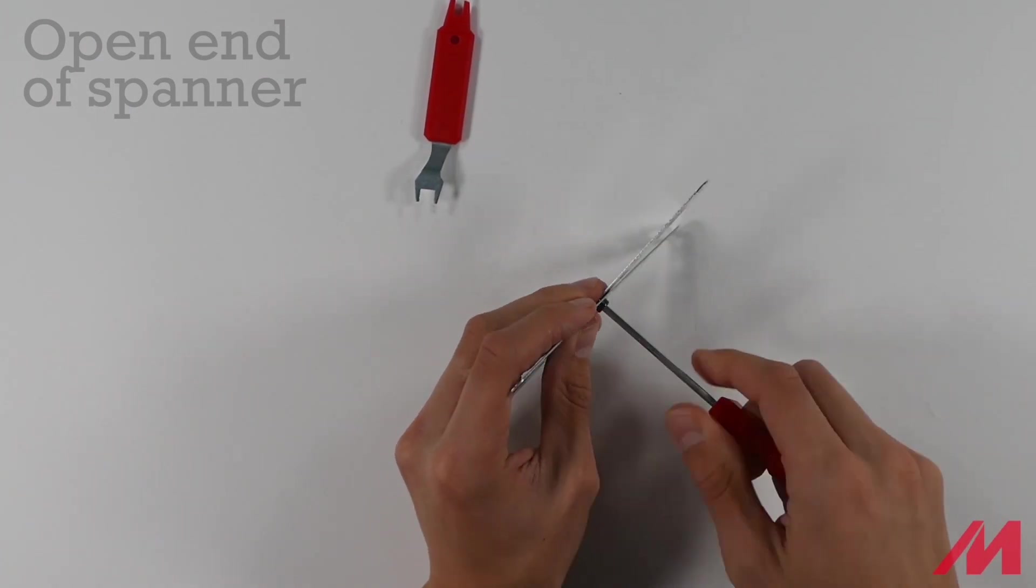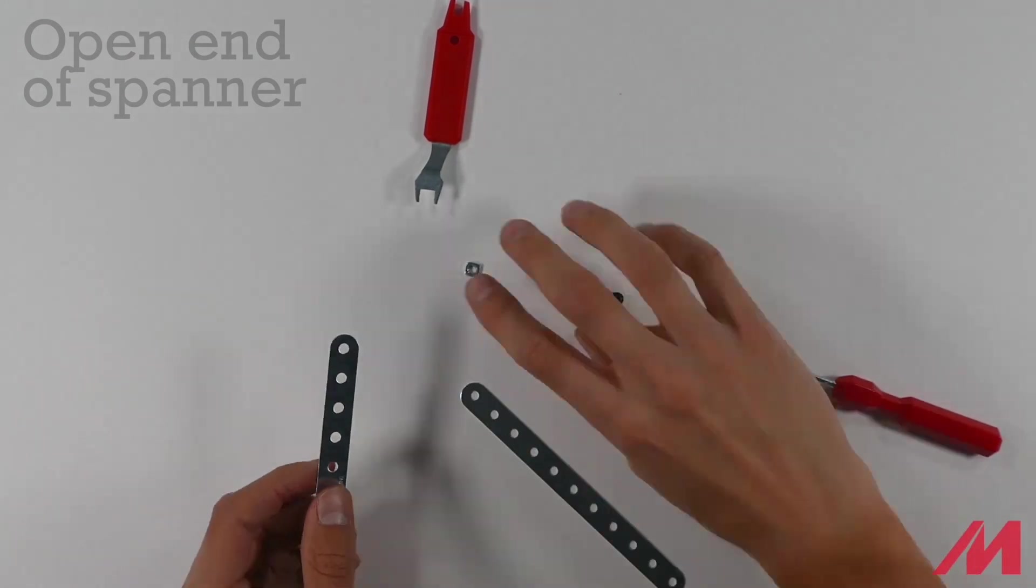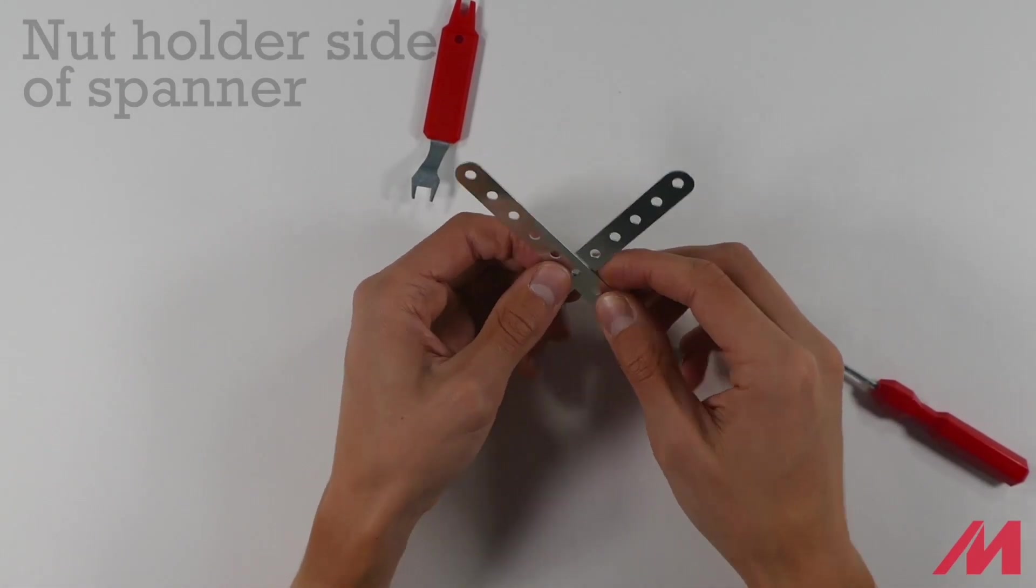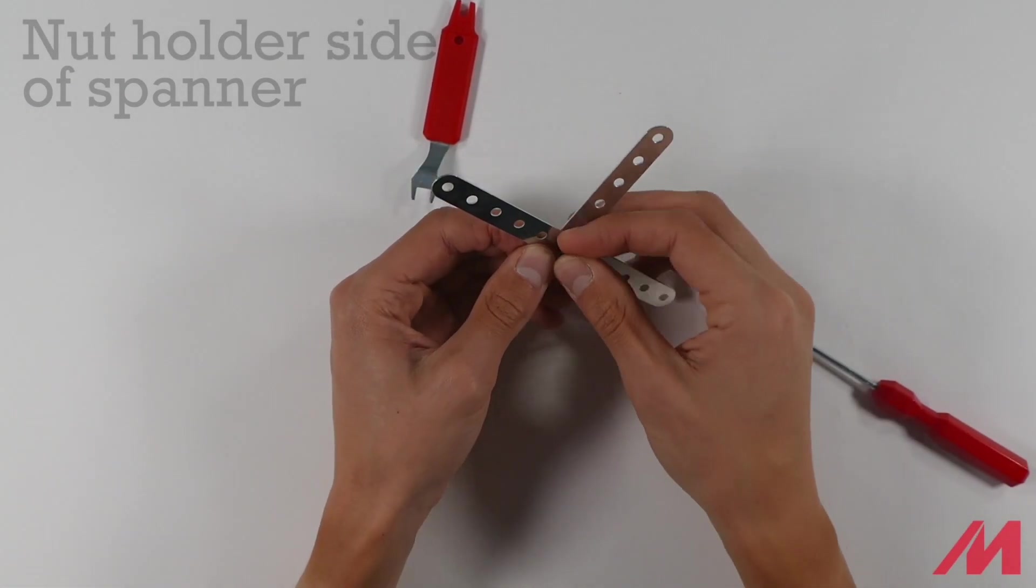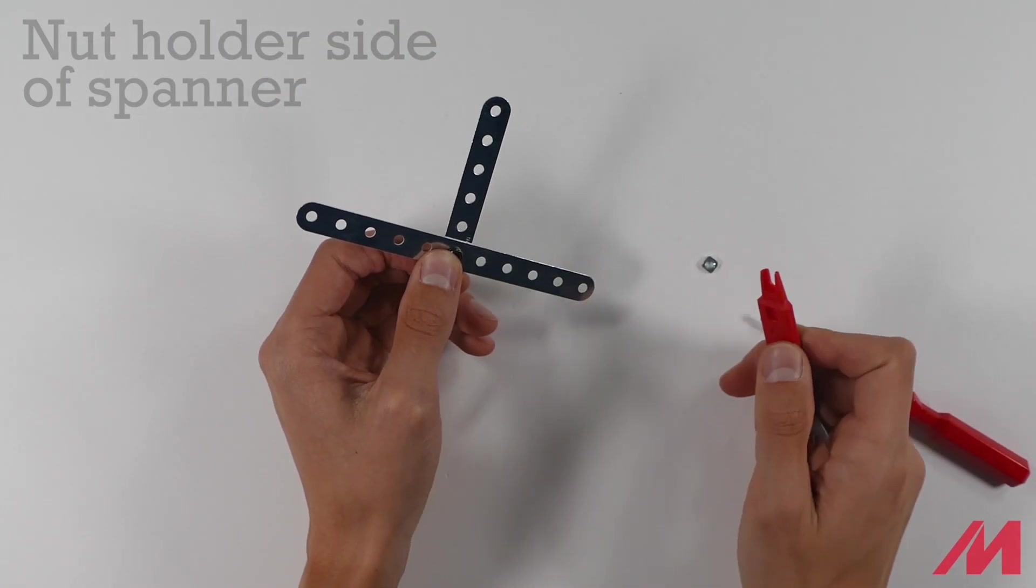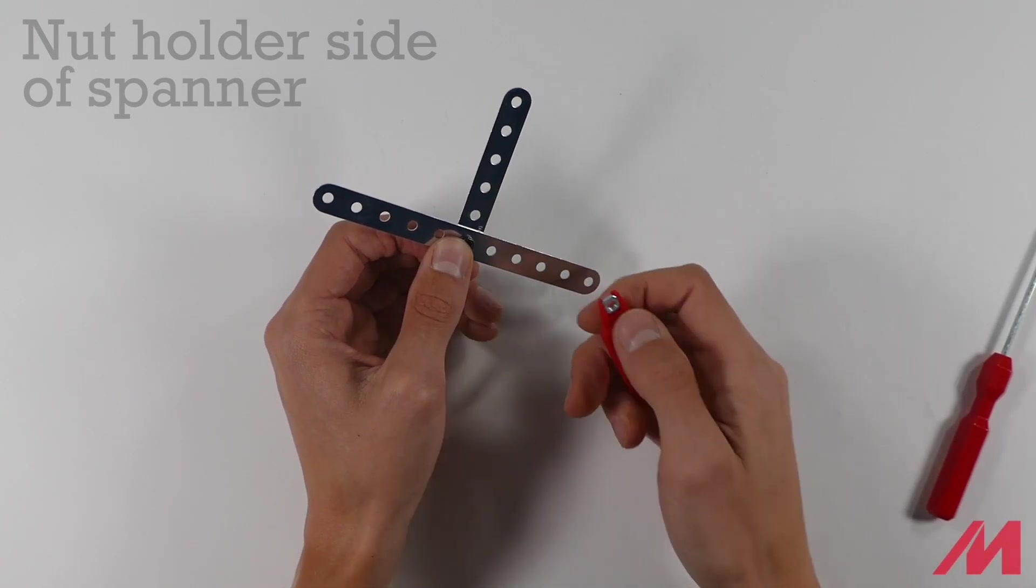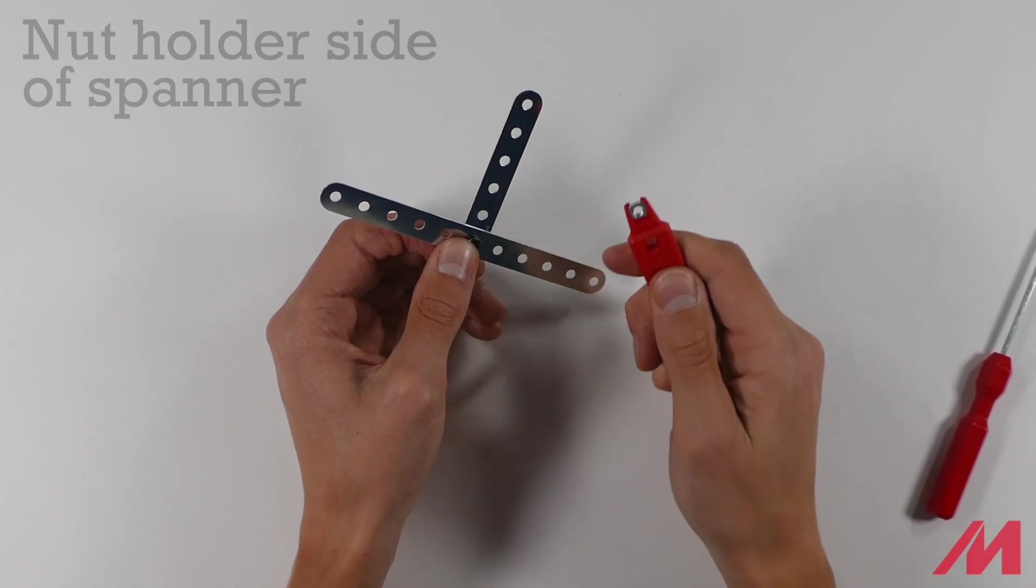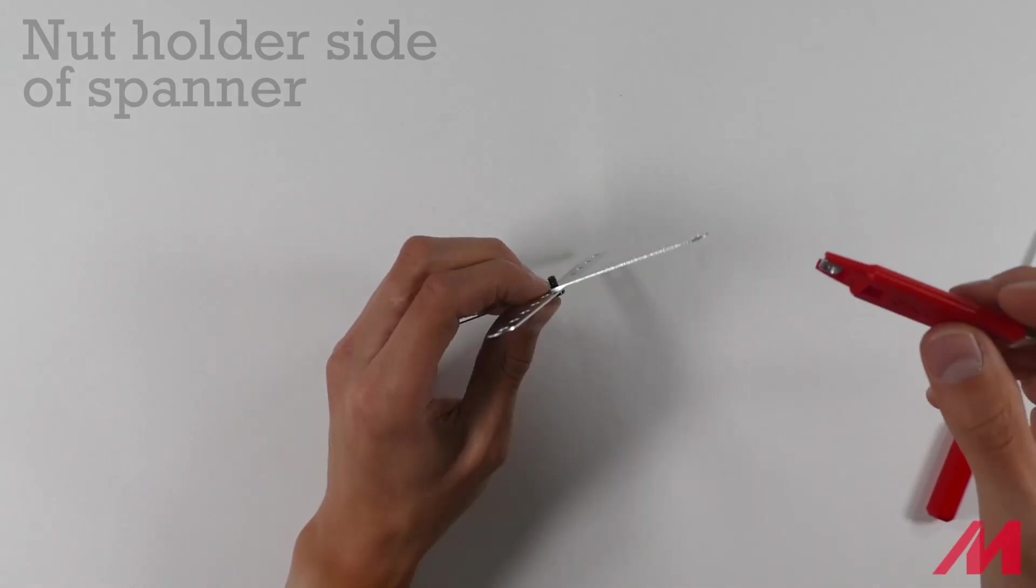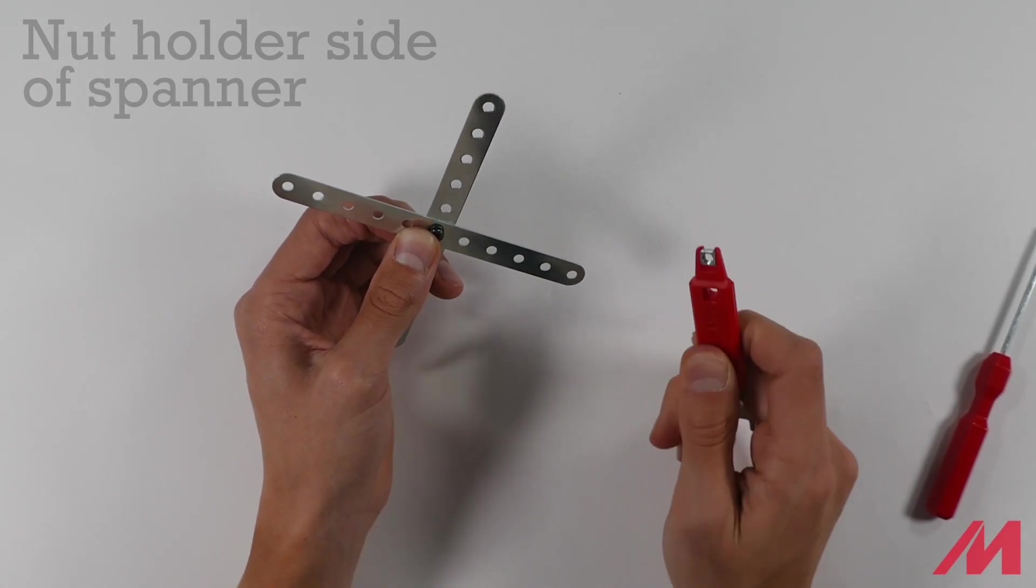I'm going to show you one more cool trick. Undo and let's start again. Two pieces. We put the bolt through. Now we use the other side of the spanner, and we can actually lift the nut up. And it holds the nut this side, which you can fit into really tight, small spaces. It's perfect.